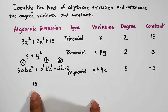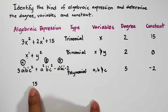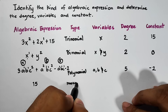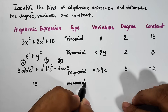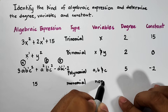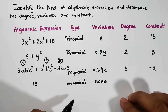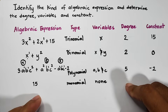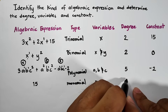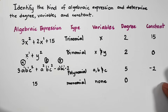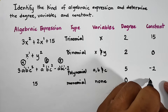For the last expression, the algebra expression is simply a constant — single term only — meaning it is a monomial. The variable is none. Remember: if the algebra expression is a constant, the degree is automatically 0. The constant is 15.